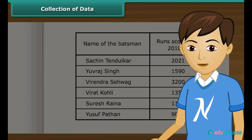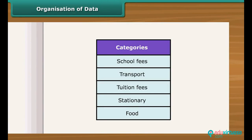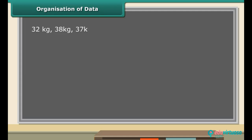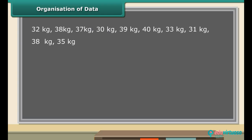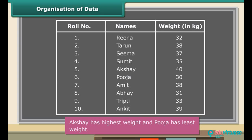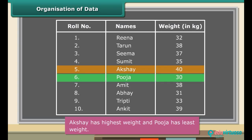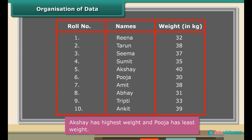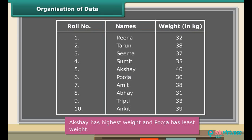So children, unless and until you don't collect the appropriate data, you cannot know the desired information. We collect data to record and organize it. Look at the following data — a class teacher of class 7 listed the weight of 10 students. Is this data easy to understand? Now look at this data. You can easily know which student has the highest weight and which has the least. So when we put data in a proper table, it becomes easy to understand and interpret. We can put many kinds of data in tabular form.